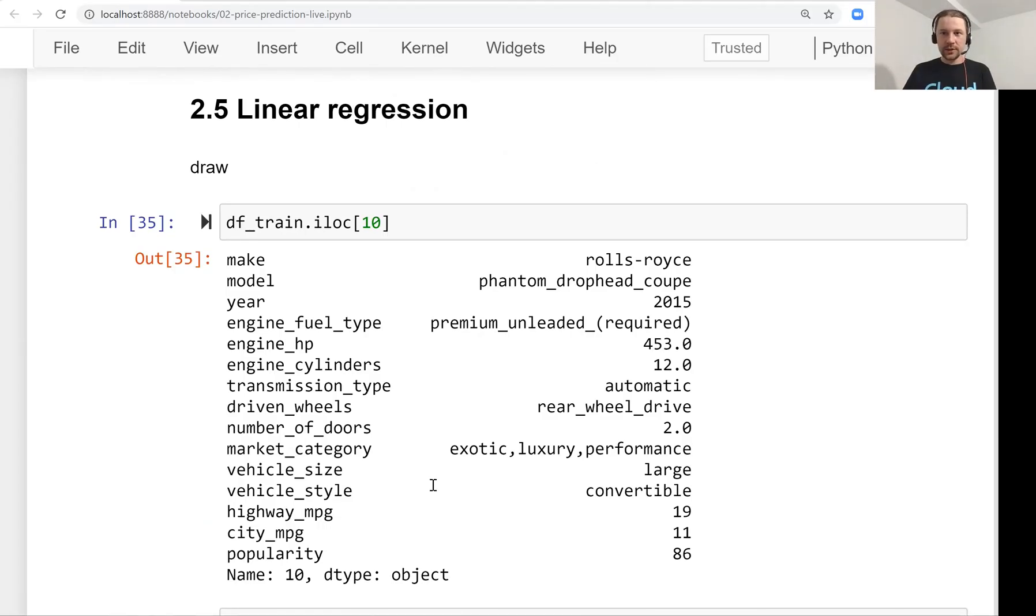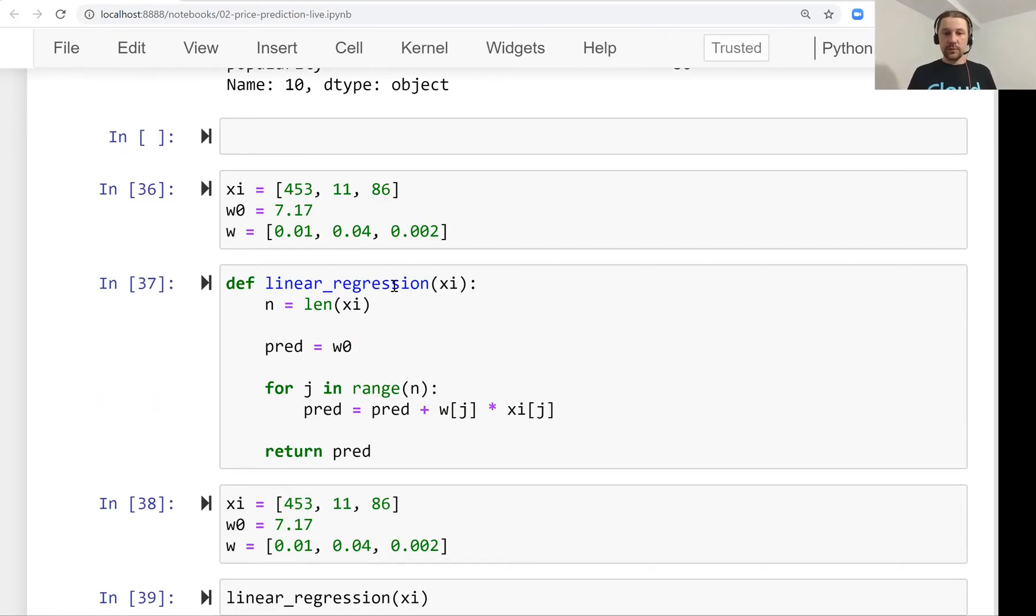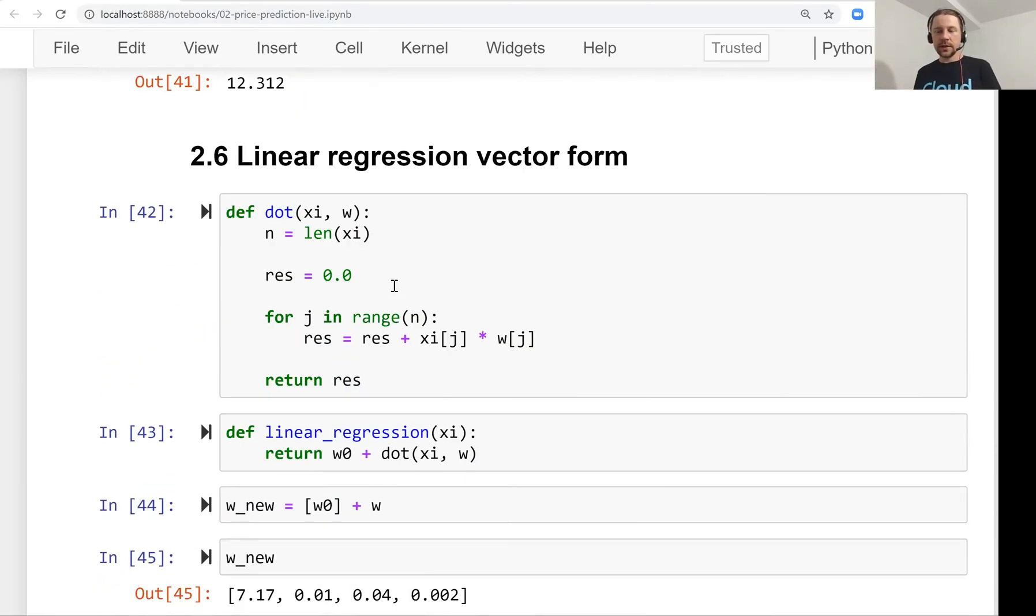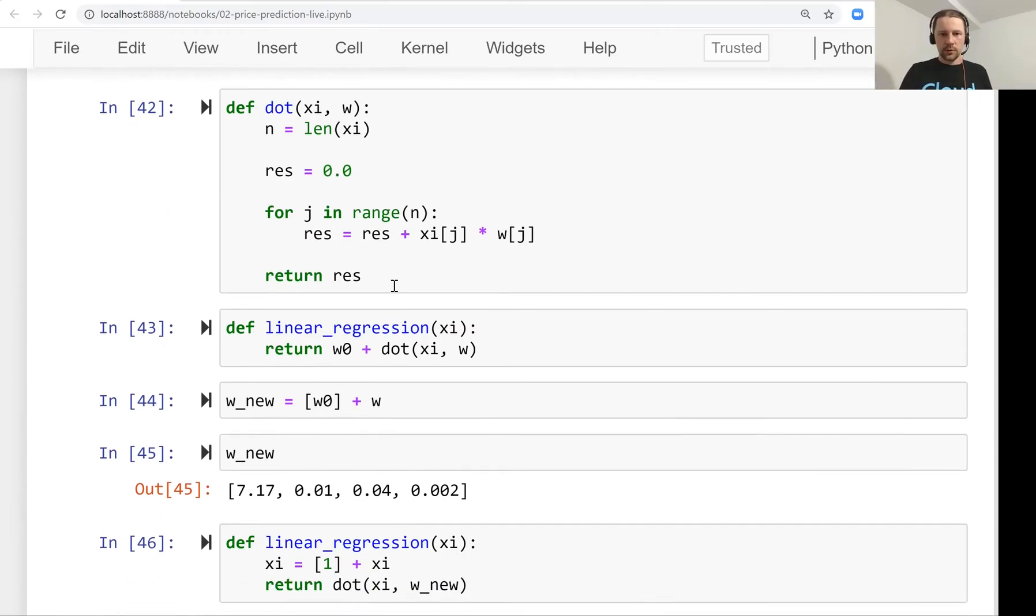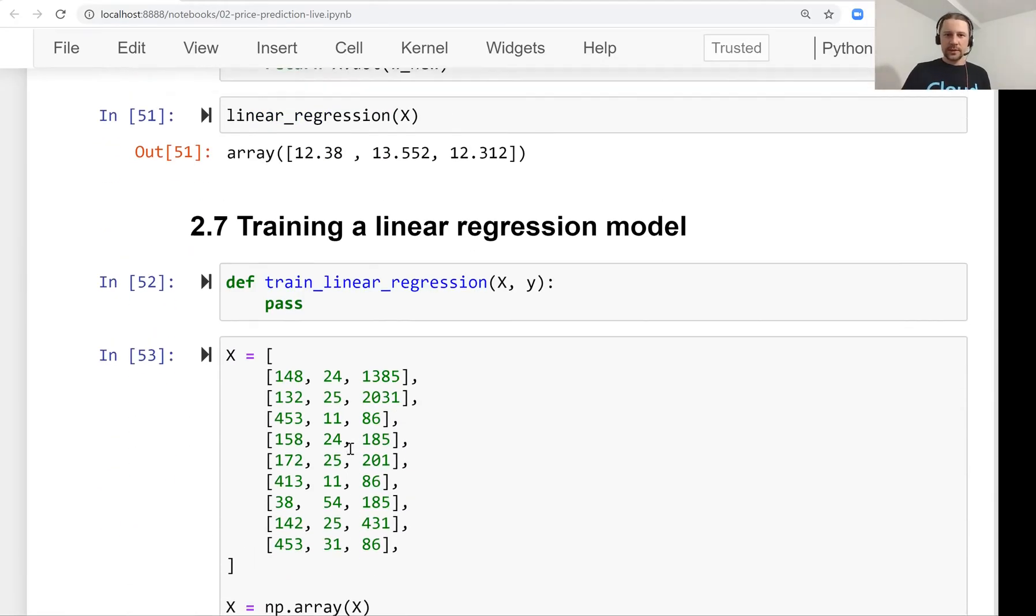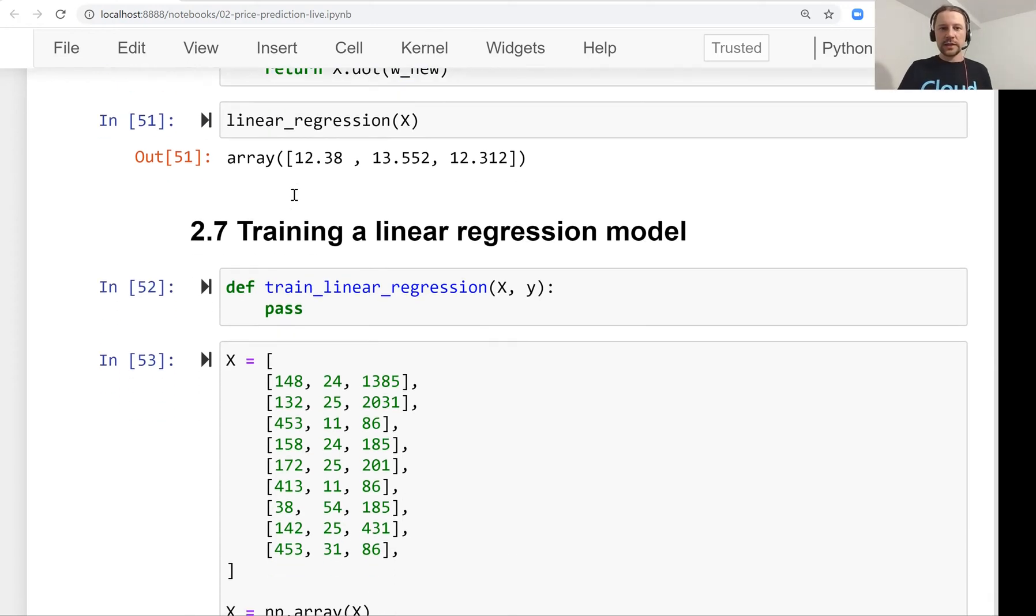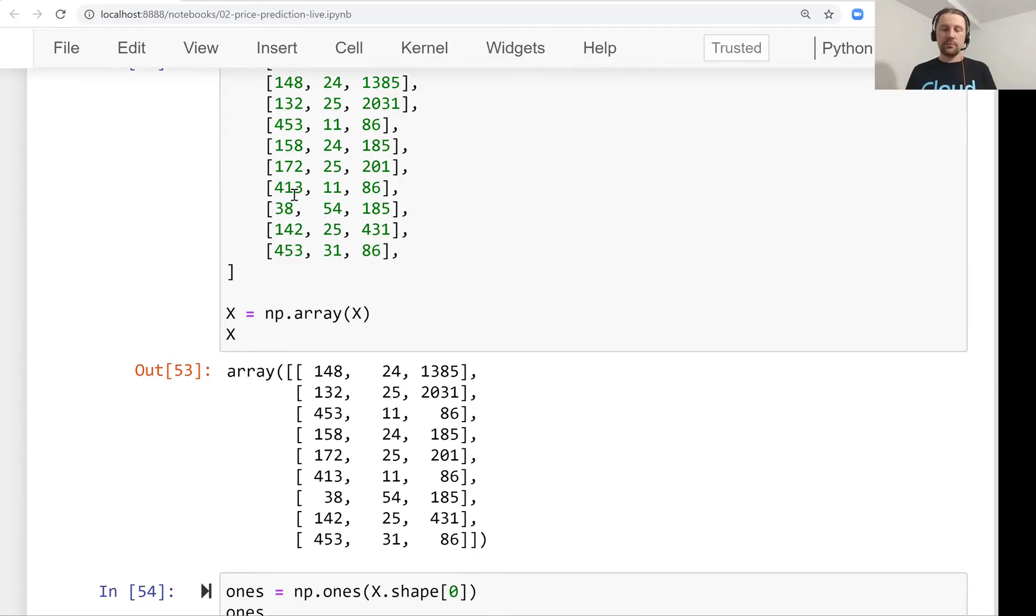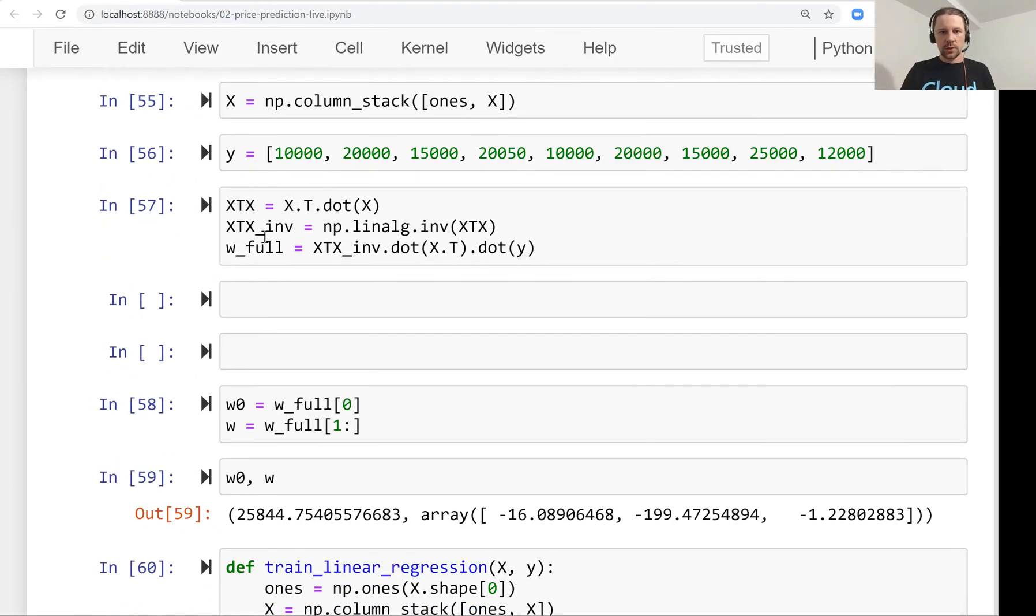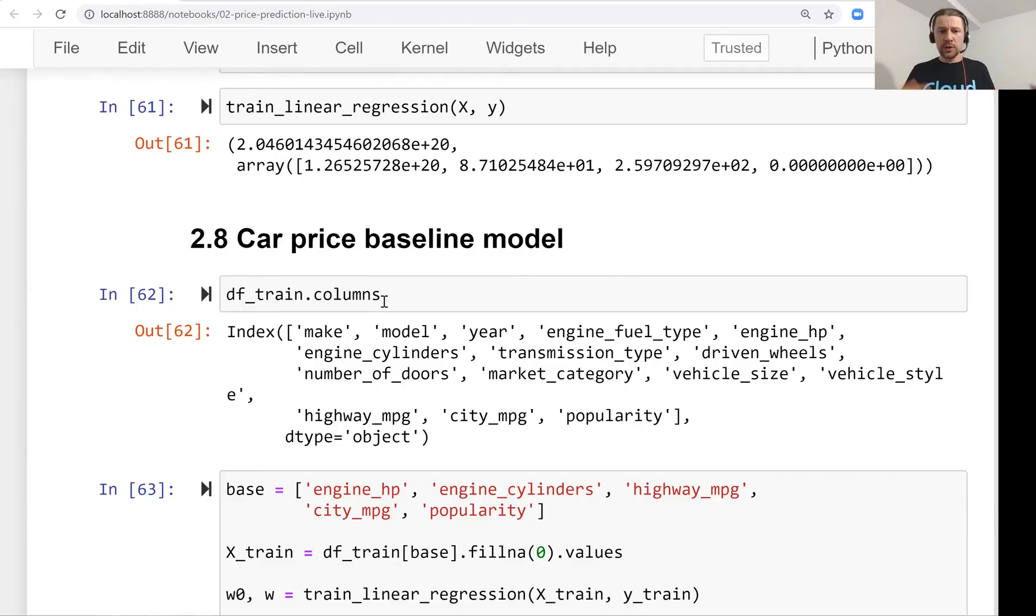Then we looked at linear regression, how it works for a single example. We implemented it as a simple formula using a for loop, which we later expanded to the vector form or matrix form using dot product, and then we also expressed it as a matrix vector multiplication. The result of linear regression, the output, is the weights vector, the bias term and the weights. Then we looked at how to actually train a model, how to obtain these weights. We saw that machine learning is not magic, it's just a formula, and this formula is called normal equation. We implemented this normal equation in numpy, and with this implementation we trained our first model.